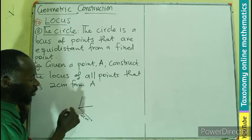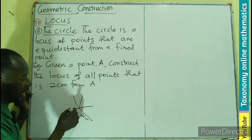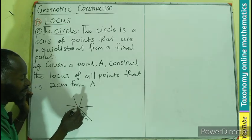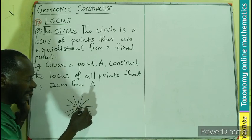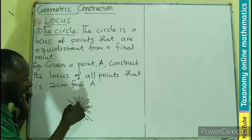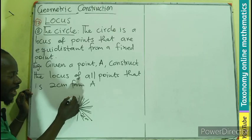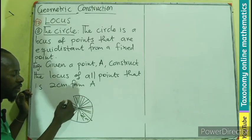So you can see that if we continue drawing two centimeters away from the point A, we might end up drawing a circle since the same measurement of two centimeters. So what we need to do is to locate the point in the question where we want to construct the locus, which is equidistant from that point.